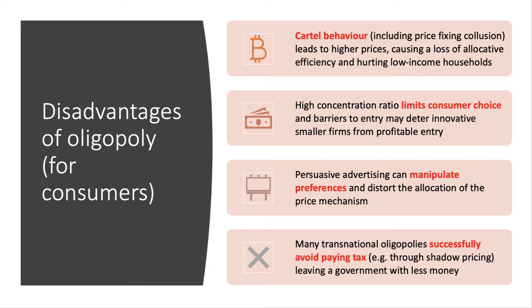Now, what are four potential disadvantages of oligopoly for consumers? The first is the danger — some would say the likelihood — of cartel behaviour: collusive oligopoly, some sort of price fixing or market sharing form of collusion, which ultimately leads to higher prices. Prices well above marginal and average cost cause allocative inefficiency, and typically high prices tend to hurt low-income families most. So you can talk about collusion having a regressive effect on income inequality.